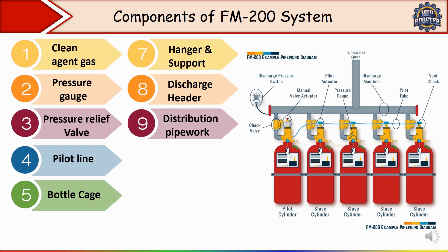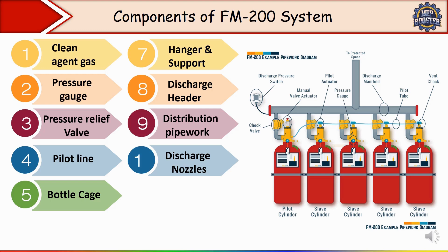Distribution pipework consists of pipes used to transport the FM-200 gas from the cylinder to the discharge nozzle. It is designed to deliver the gas evenly across the entire protected area, and must be sized and installed correctly to ensure proper flow rate and pressure distribution. The next component is the discharge nozzles — specially designed nozzles placed throughout the protected area that discharge the FM-200 gas into the room or enclosure. Finally, the control panel receives signals from smoke or heat detectors, activates alarms, and initiates the discharge of FM-200 gas. It also provides feedback on system status and can manually trigger or stop the discharge.